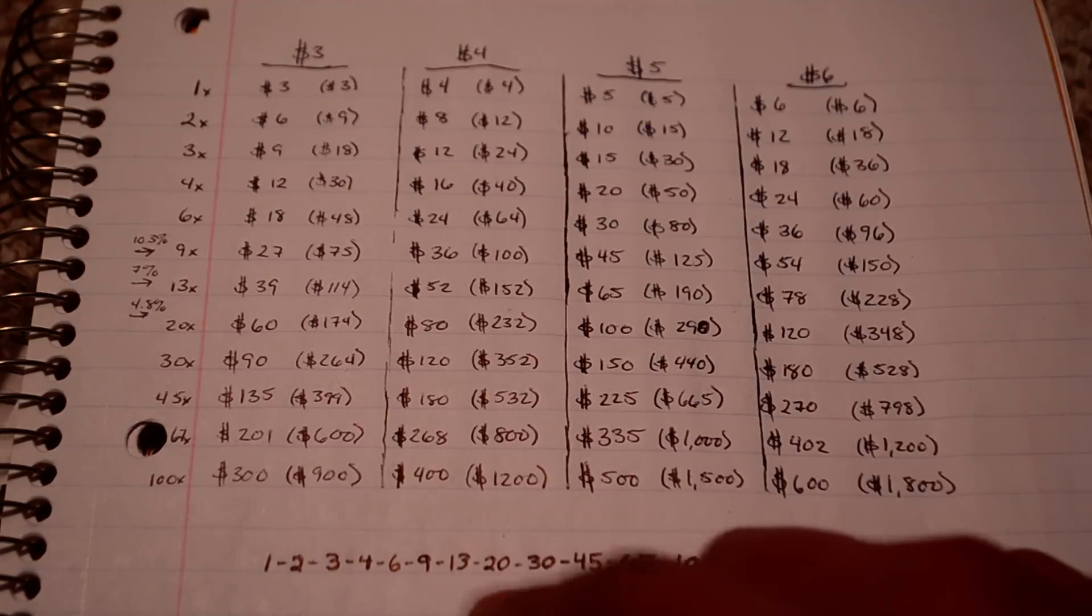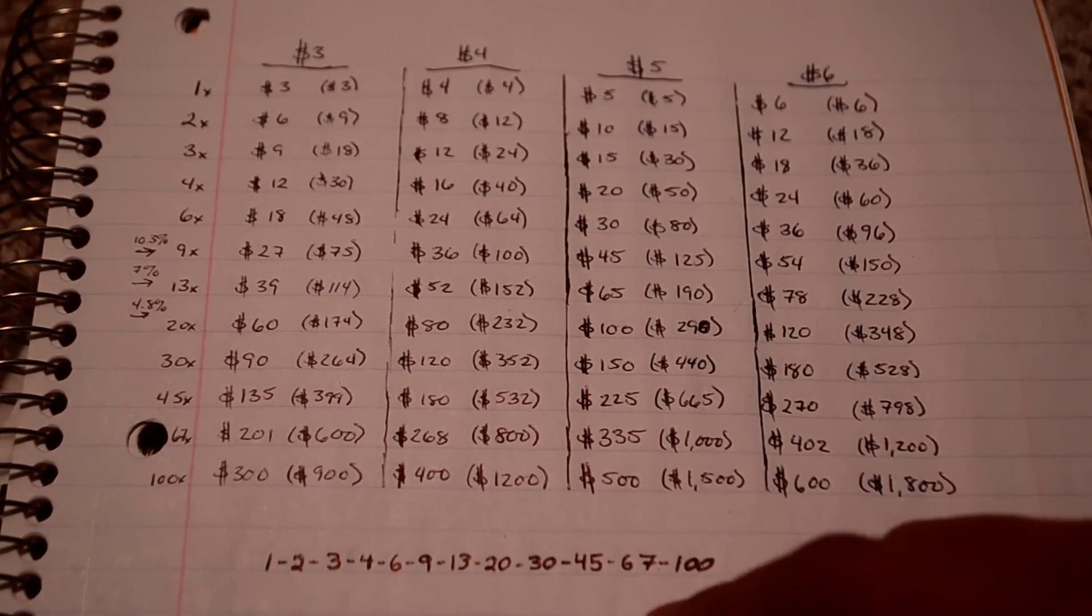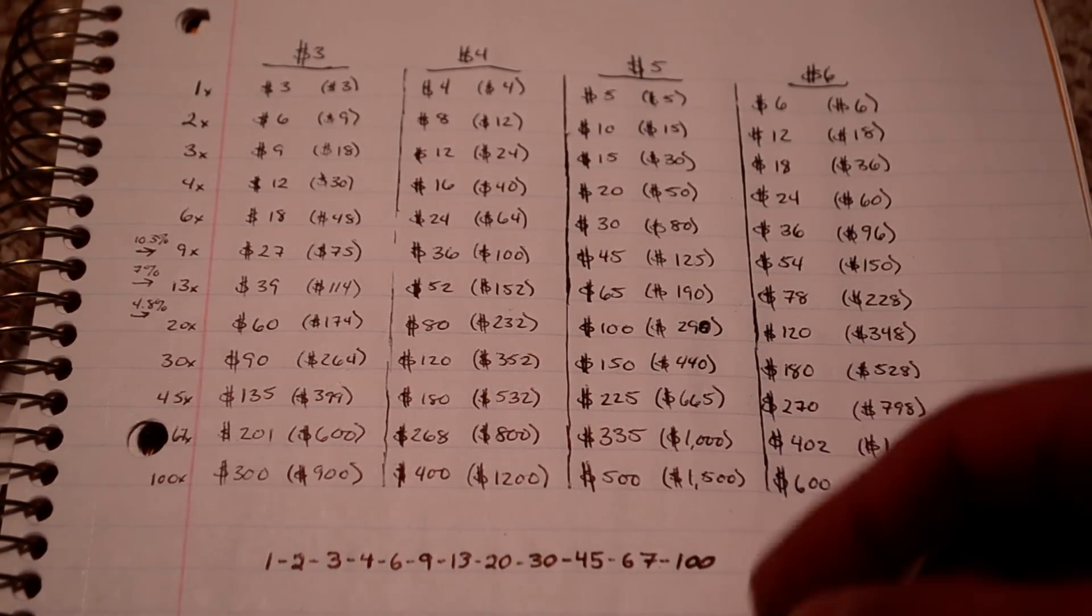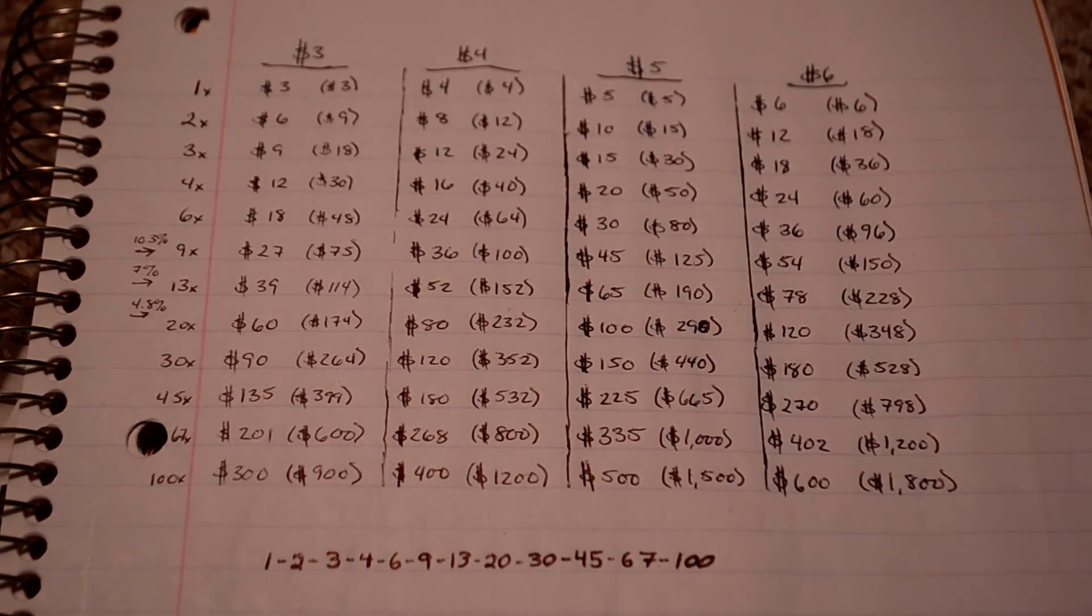Just 1, 2, 3, 4, 6, 9, 13, 20, 30, 45, 67, 100. That's just what you multiply your bet by. And, like I said, it's an easy way to turn the house's advantage over to your side.